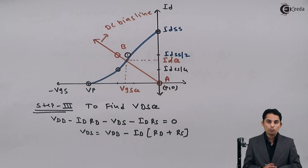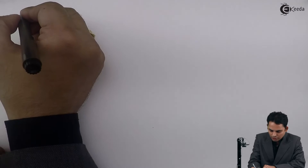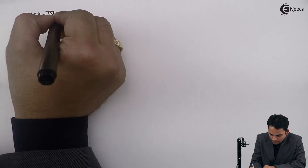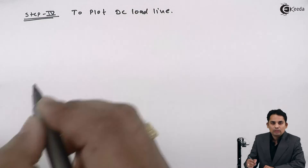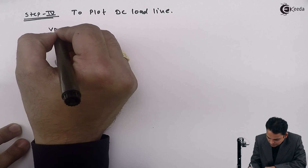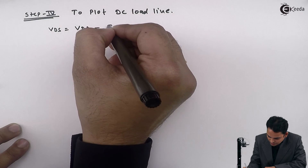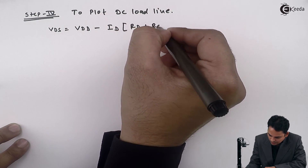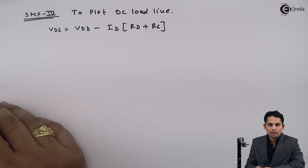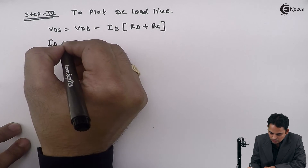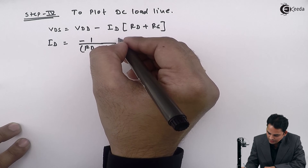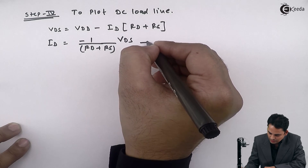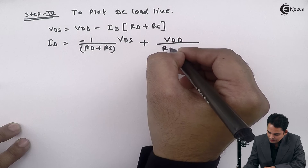Step 4 is to plot the DC load line. We have the equation Vds equals Vdd minus Id into bracket Rd plus Rs. Taking Id on one side, the final equation becomes: Id equals minus 1 upon (Rd plus Rs) multiplied by Vds, plus Vdd divided by (Rd plus Rs).